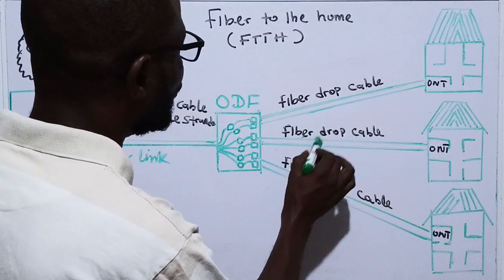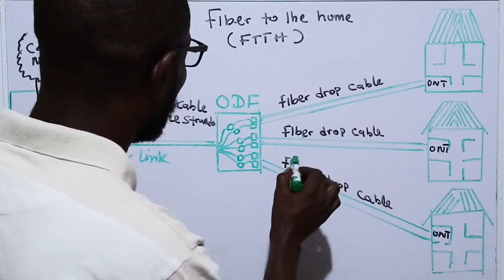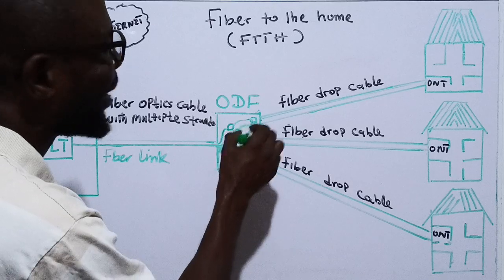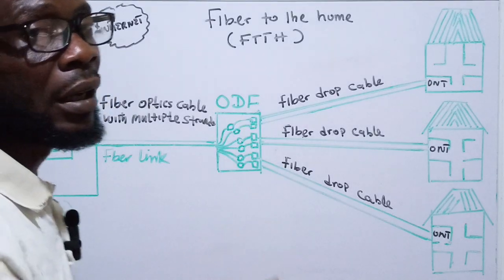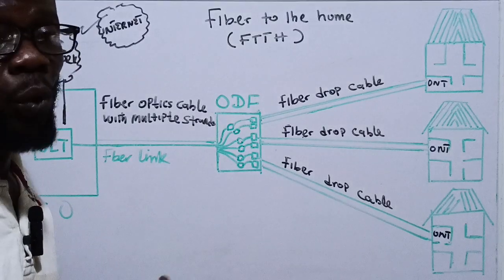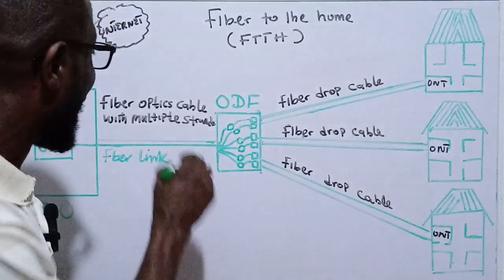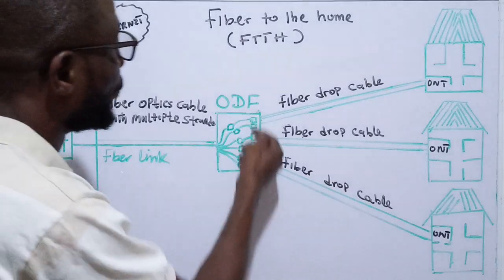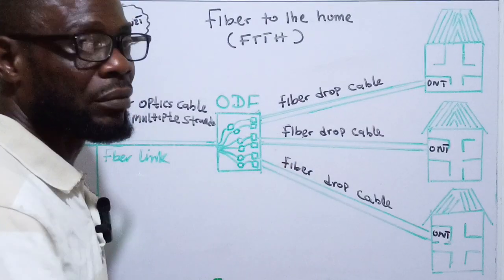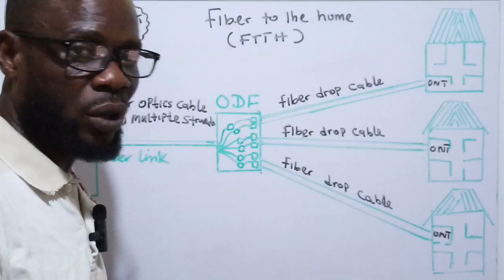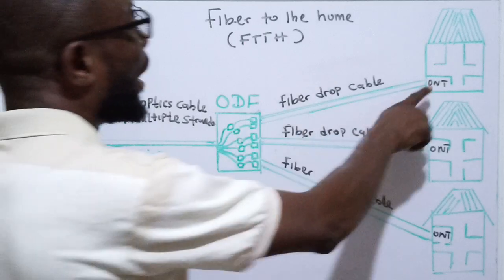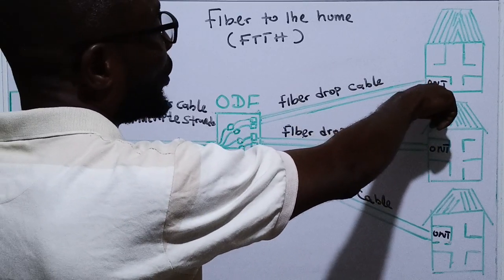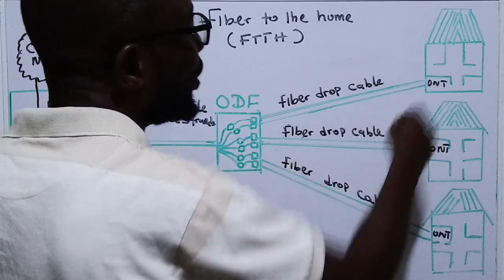To recap: the drop cable has two strands — transmit and receive — linking from the ODF to the customer. Inside the Optical Distribution Frame there are many fiber trees and fiber pigtails, typically 250 pigtails spliced to 250 fiber strands from the main cable. The drop cable connects to the Optical Network Terminal inside the customer's home.